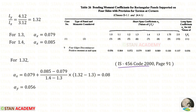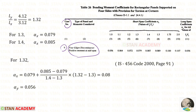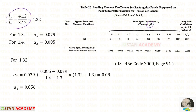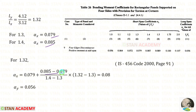From IS code page 91, we find the bending moment coefficients. The corners are held down, so we select case number 9: four edges discontinuous, positive moment at mid-span. We need the short-span coefficient αx. LY/LX = 4.12/3.12 = 1.32, which lies between 1.3 and 1.4. Interpolating between those two values: αx = 0.08. For the long-span coefficient αy, for all values of LY/LX, αy = 0.056.